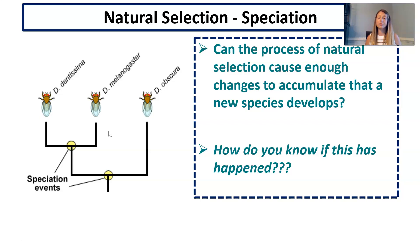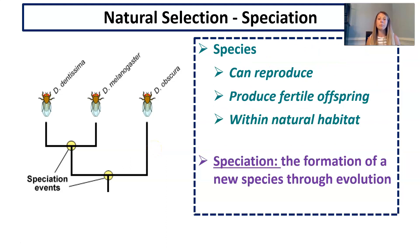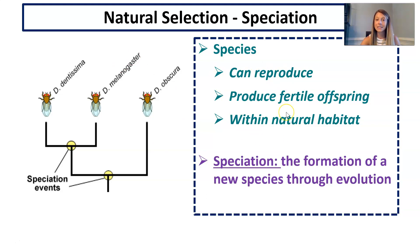So the question became: can natural selection cause enough changes to accumulate that an entirely new species will develop? Is that why we have different species of fruit flies? We probably need to refresh our memory on the definition of a species: members of the same organism that can reproduce and produce fertile offspring within their natural habitat. Speciation is the formation of a new species through evolution — enough changes have occurred that they can no longer do those things and would no longer be considered the same species.